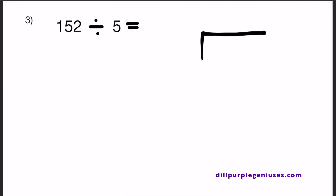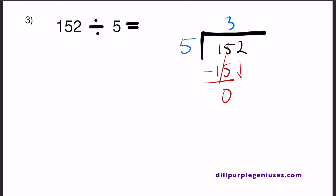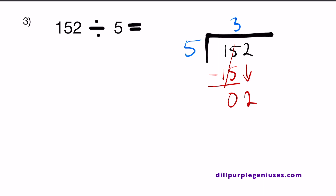Let's look at number 3. We have 152 divided by 5. 152 is the dividend and 5 is the divisor. How many times does 5 go into 1? 5 goes into 1 zero times, so let's make it 2 digits. How many times does 5 go into 15? 5 goes into 15 three times. So 5 times 3 equals 15, and we subtract that from 15 to get 0. Now, 5 does not go into 2, so the quotient will be a decimal. We can add a .0 to the dividend and bring this result down, so instead of 2 we have 2.0. Don't forget to add your decimal point next to your quotient.